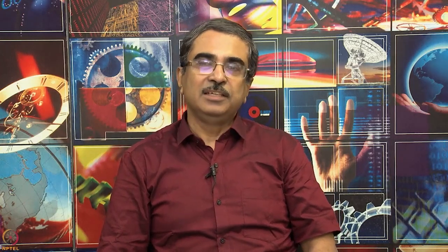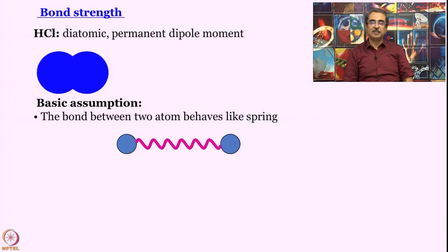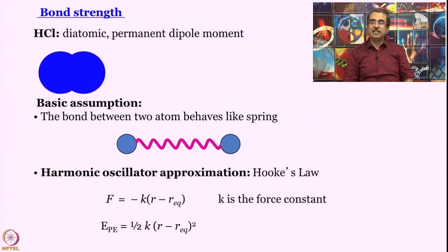The basic assumption in formulating the quantum mechanical treatment of HCl, to start with at least, is that the bond between two atoms behaves like a spring - and not just any spring, a spring that is well behaved, a spring that follows Hooke's law. Hooke's law you must have studied is such where the force, restoring force, is proportional to the displacement and it is always towards the center - that is why you get this minus sign.